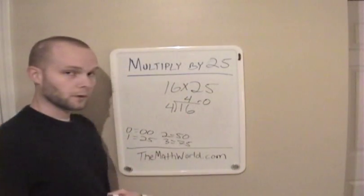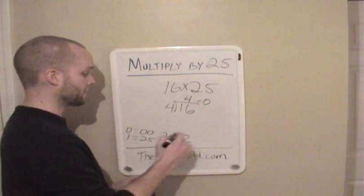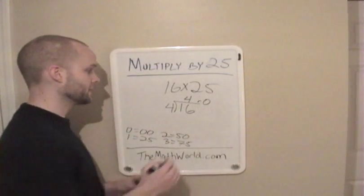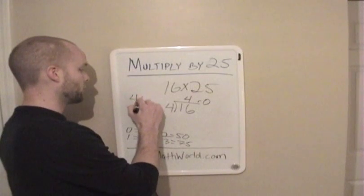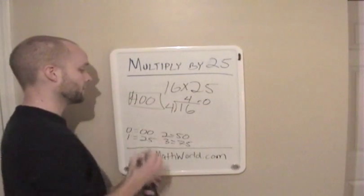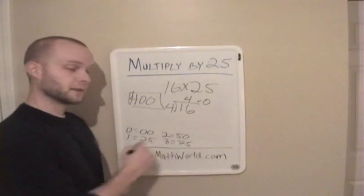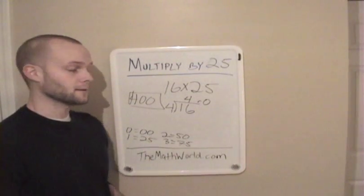So since we had 4 as our answer up here, and we had a remainder of 0, we're just going to add two 0's on the end, and our answer is 400. And that's our answer. And so make sure you always remember this as far as the remainder. That's what you add on the end.